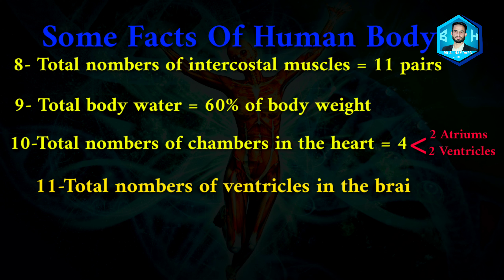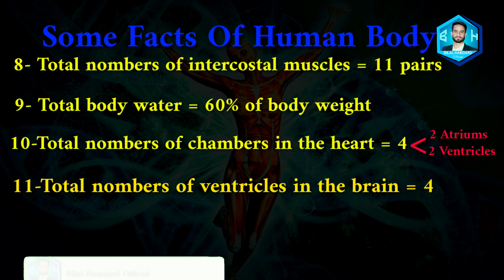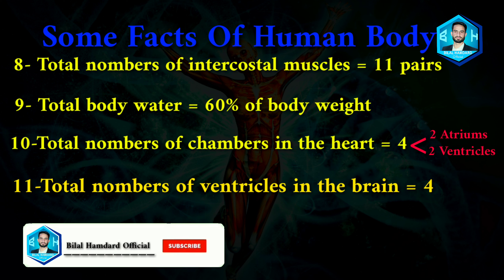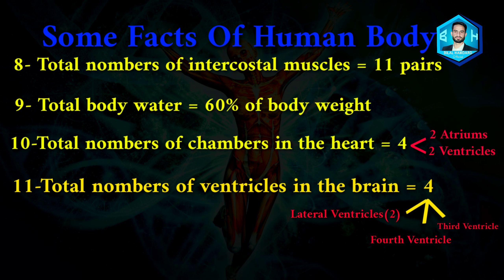Number eleven: total number of ventricles in the brain is four, which include the two lateral ventricles, the third ventricle, and the fourth ventricle. In the human brain there are four ventricles: two lateral ventricles, one third ventricle, and one fourth ventricle.